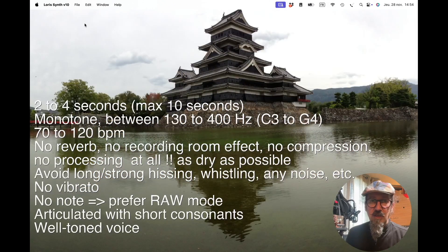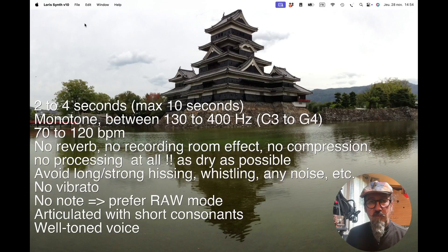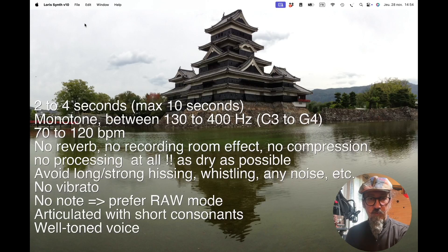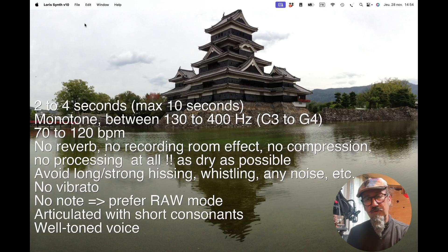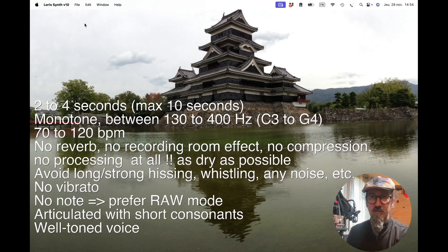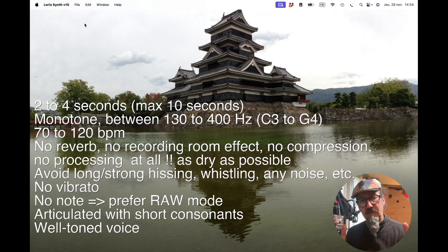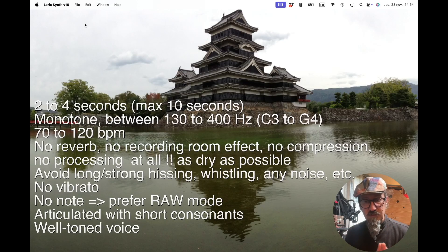The first thing is you need to have short samples, or short selections within the sample — so 2 to 4 seconds. You can go up to 10 or 12 seconds, but the longer you get, the worse the transient will be.